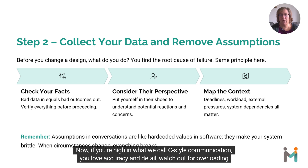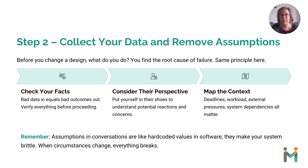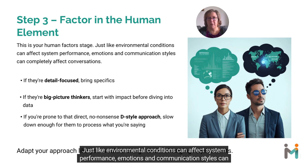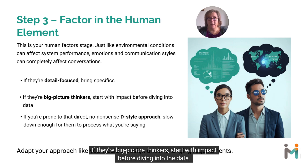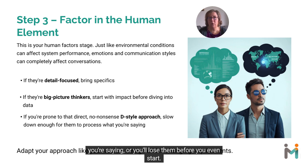If you're high in C-style communication, you love accuracy and detail — watch out for overloading the other person with data they can't absorb. Pick the most relevant evidence and stick to it. This is your human factors stage. Just like environmental conditions can affect system performance, emotions and communication styles can completely affect conversations. If they're detail-focused, bring specifics. If they're big-picture thinkers, start with impact before diving into the data. And if you're prone to that direct, no-nonsense D-style approach, slow down enough for them to process what you're saying, or you'll lose them before you even start.